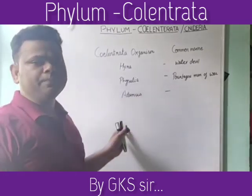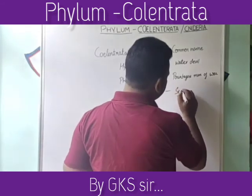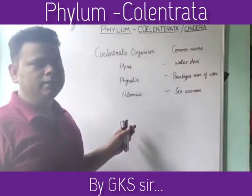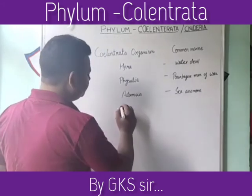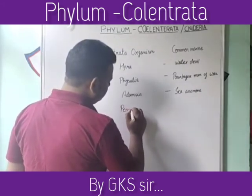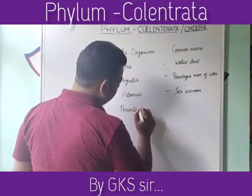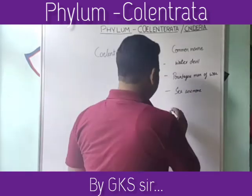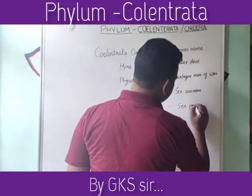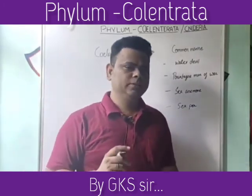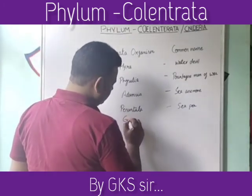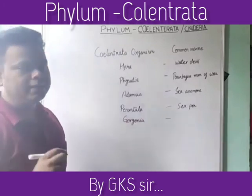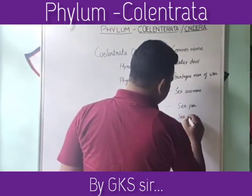The next example is Adamsia — it is commonly known as sea anemone. Next is Pennatula — it is commonly known as sea pen. Next is Gorgonia — it is commonly known as sea fan.